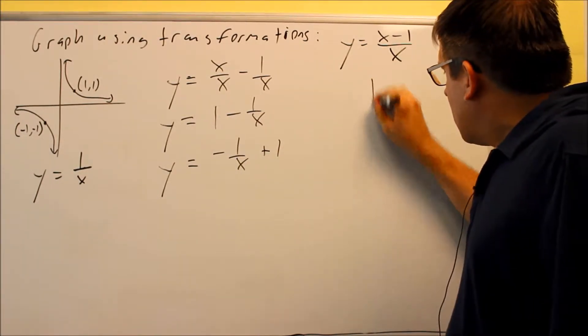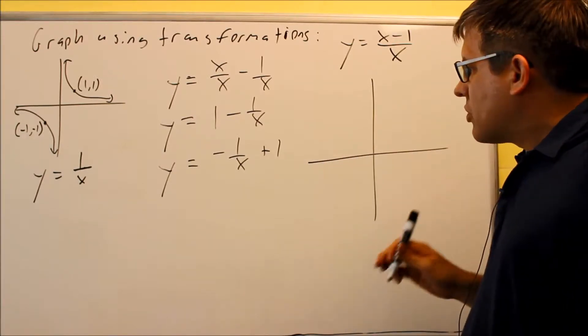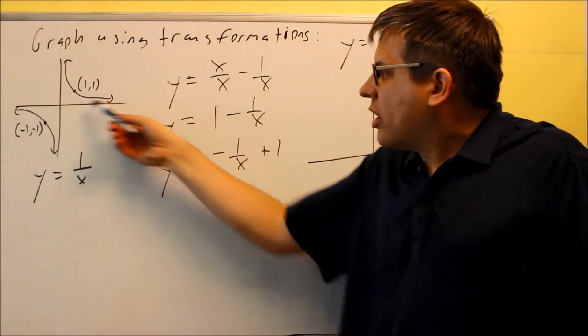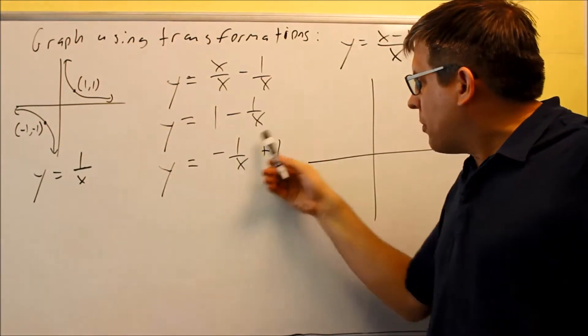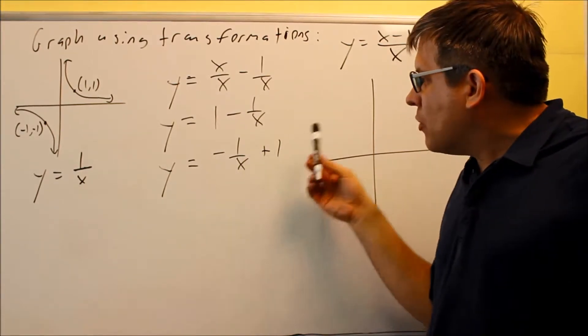What that looks like is we're going to first take this, and normally your horizontal asymptote would be at zero, but the plus 1 on the outside moves it up one.